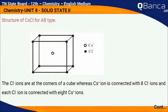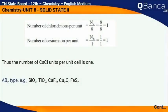In the CsCl structure, the Cl⁻ ions are at the corners of the cube, whereas the Cs⁺ ion is connected with 8 Cl⁻ ions and each Cl⁻ ion is connected with 8 Cs⁺ ions. Number of chloride ions per unit cell = Nc/8 = 8/8 = 1. Number of cesium ions per unit cell = NB/1 = 1/1 = 1. Thus, the number of CsCl units per unit cell is 1.